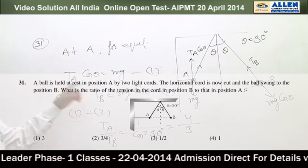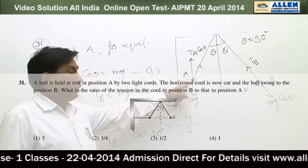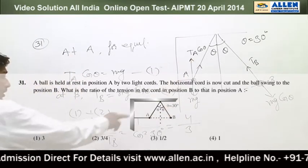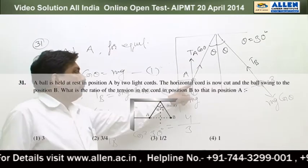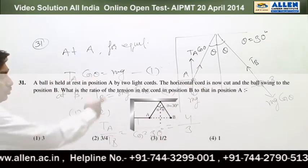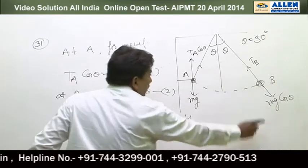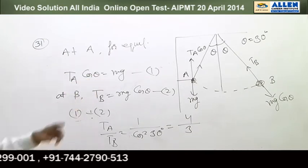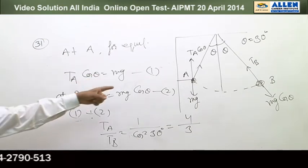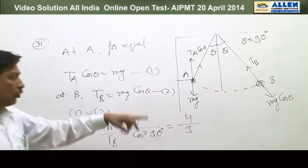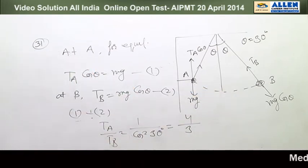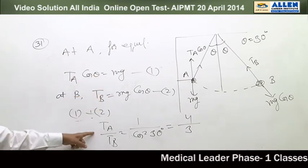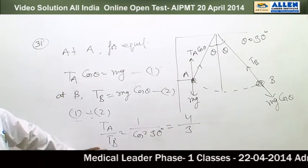Question number 31. At point A, for the equilibrium condition we resolve tension: T_A cosθ = Mg. When the thread is cut, the particle performs vertical circular motion. At point B, since it is executing vertical circular motion, T_B = Mg cosθ. Dividing equation 1 by equation 2, we get T_A/T_B = 4/3. So option 2 is the correct answer.